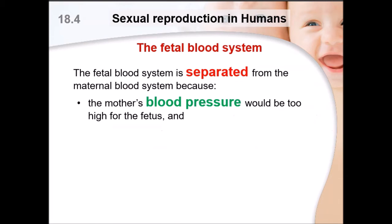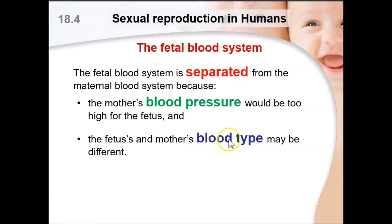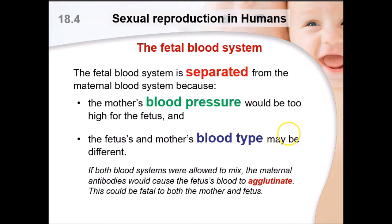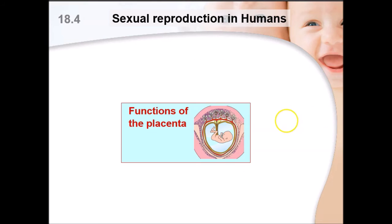This is an important slide for essay questions about the significance of the umbilical cord and fetal blood system. The fetal and maternal blood systems are separated for two key reasons: first, the mother's blood pressure would be too high for the fetus and could burst the tiny fetal capillaries, causing internal bleeding and death. Second, if the mother and baby have incompatible blood groups — for example, mother is blood group A and baby is blood group B — agglutination will occur, which is one of the highest causes of natural abortion.